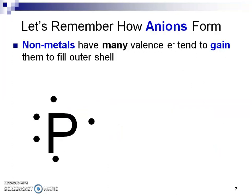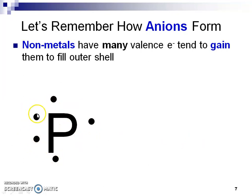Now let's think about anions. Phosphorus is a non-metal. It has many valence electrons — in this case it has five — but notice we have a pair and three singles. That's going to be important. This is going to tell us that the pair is going to stay as a pair, but it needs three more.